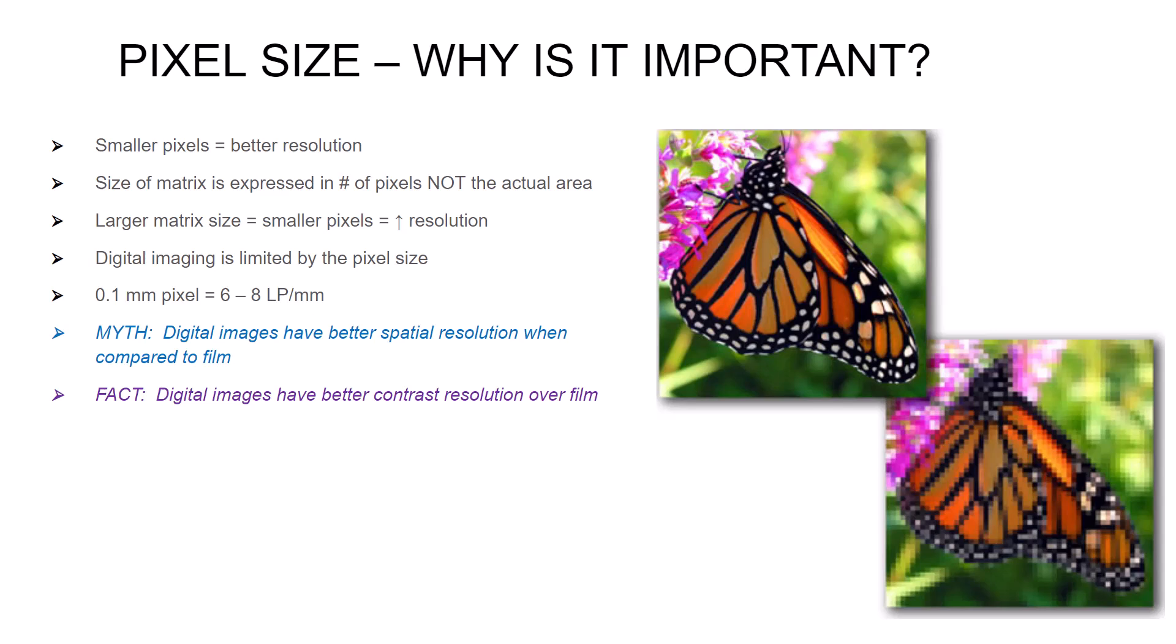So why is pixel size so important? Smaller pixels means you'll have better image resolution. The size of the matrix is expressed in number of pixels, not the actual area in terms of length and width. It's the number of pixels. Given the same field of view as in these two images on the right, having a larger matrix size means you'll have smaller pixels and better resolution.